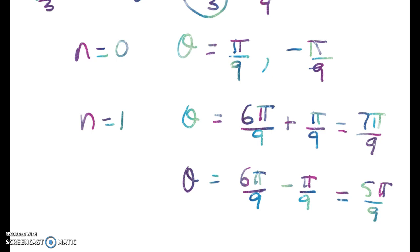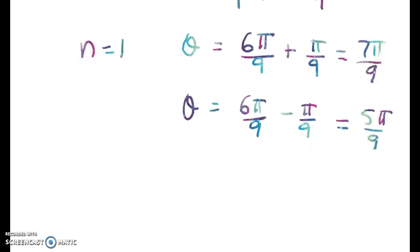Right, so we've now got these three values of theta. So theta is equal to pi on 9, 5 pi on 9, and 7 pi on 9.